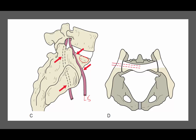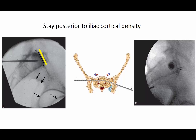The L5 nerve root is basically sitting on top of the sacral ala, resting right in that area. If you're not careful, you can go in, out, hit the nerve root, and go back in. This shelf behind where the nerve is sitting helps form the iliac cortical density. Between zones one and two is that iliac cortical density — above that is the nerve, and the pin needs to stay posterior to it. Here you can see the iliac cortical density with the screw sitting behind it.